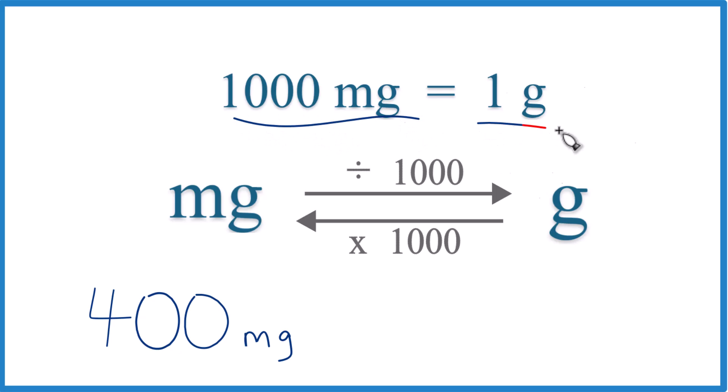1,000 milligrams equals 1 gram, or 1 gram equals 1,000 milligrams. This is what we call a conversion factor, and you need it to convert from milligrams to grams, or grams to milligrams.